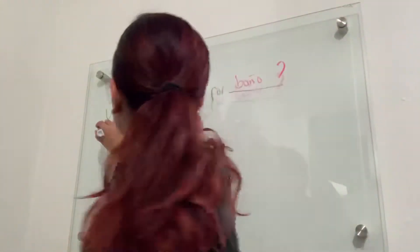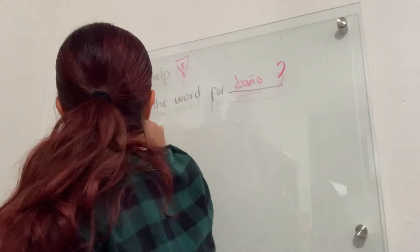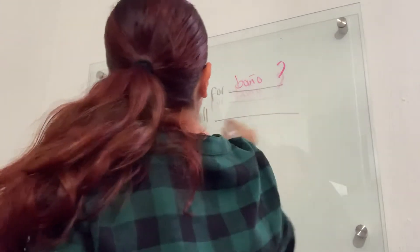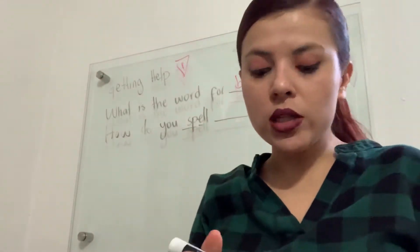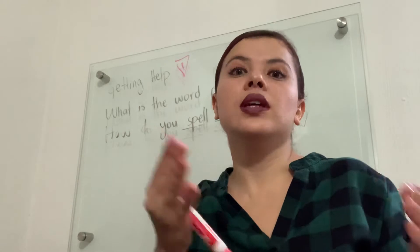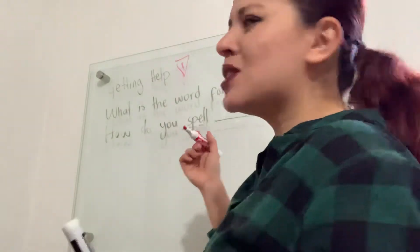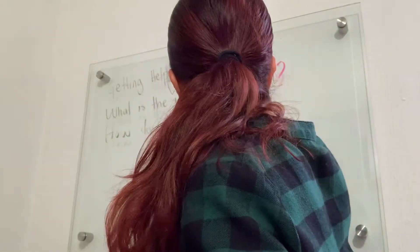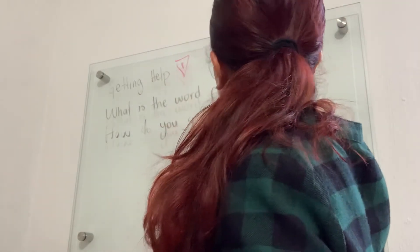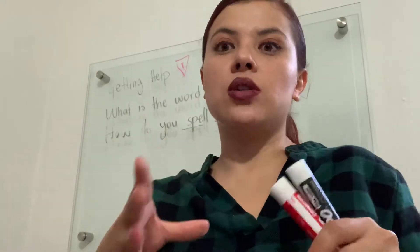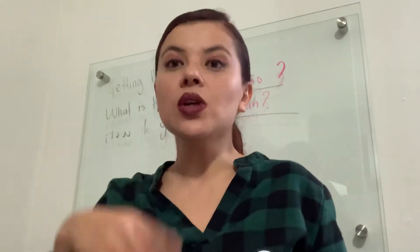Another expression is 'How do you spell?' — How do you spell? This word 'spell' means you want to know the letters included in a word. For example, if I already told you 'restroom,' you will say 'How do you spell restroom?' And then your teacher or someone you're talking with will tell you: R-E-S-T-R-O-O-M. That situation of telling each letter is a spell — it's the action of spelling. You're spelling a word.